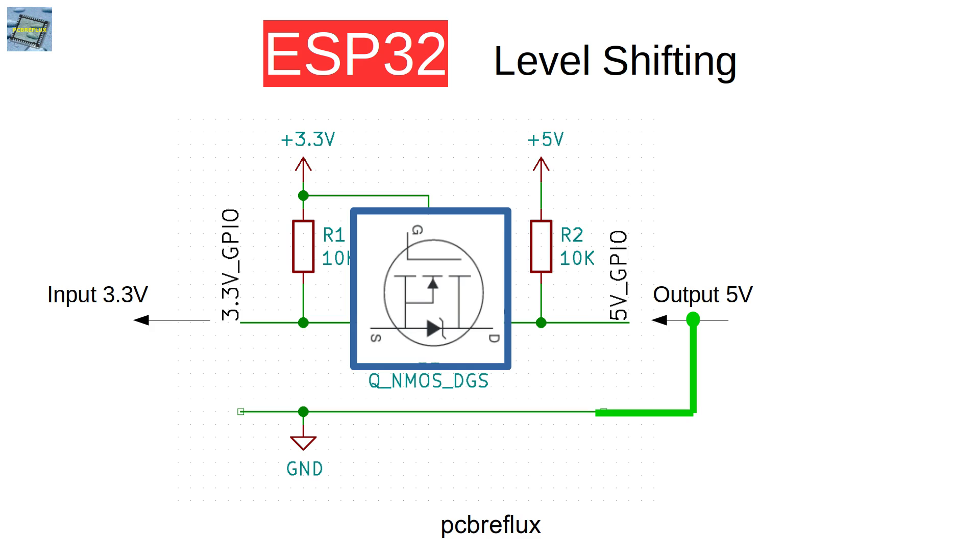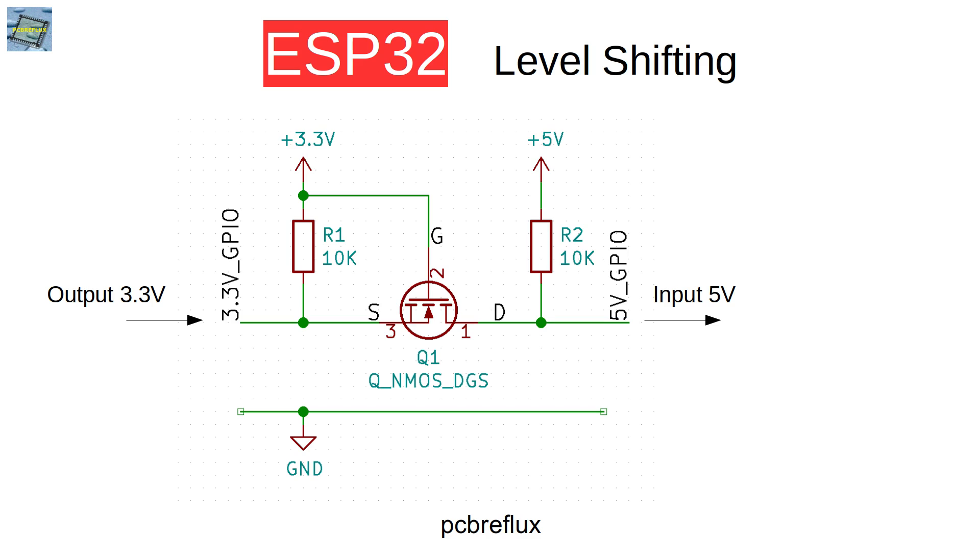and the same works also at the other side but with a different principle. If we now use our 3.3V side as an output and pull the output to high then our N-channel MOSFET don't conduct and because of the pull-up resistor the output of our level shifter is pulled to high and if we now pull our 3.3V side at the low level or to ground then our N-channel MOSFET conducts and pull also the 5V side to ground and so the 5V side is also at the low level.